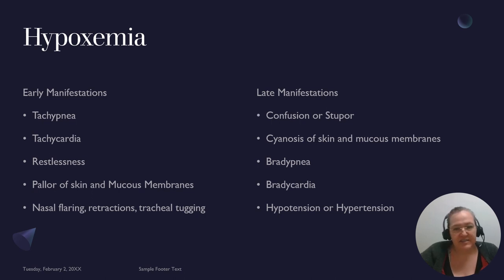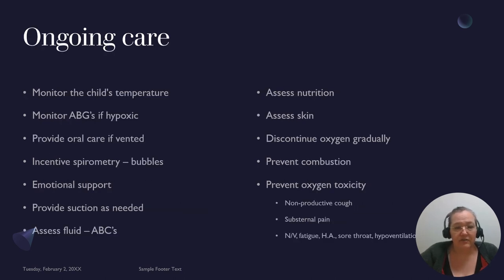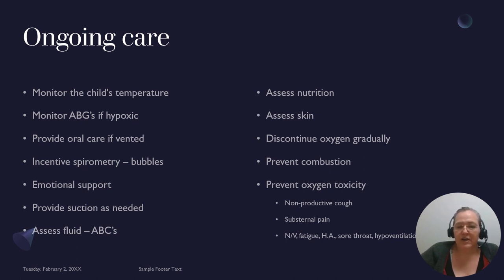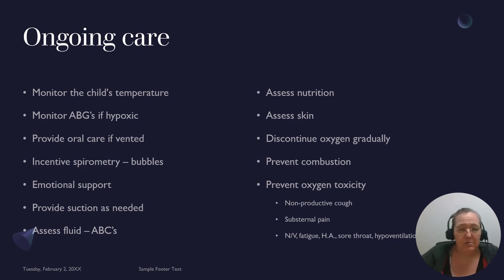Know early versus late signs — very easy to miss on a test. For ongoing hospital care: always monitor the child's temperature. If hypoxia is suspected, an ABG will be ordered to check if the child has been hypoxic and what their pH balance is. If on a ventilator, oral care is very important. If not on a ventilator, teach incentive spirometry — for children we use alternative methods like blowing bubbles, a pinwheel, or trying to blow a ping pong ball off the table.